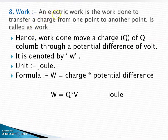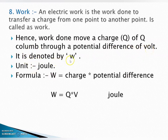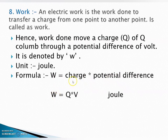Next definition is work. Electric work is the work done to transfer a charge from one point to another point. Work done to move a charge of Q coulombs through a potential difference of V volts. Charge is denoted by Q, unit is coulomb; potential difference is voltage, unit is volt; work is denoted by W, unit is Joule. Formula: W = Q × V.